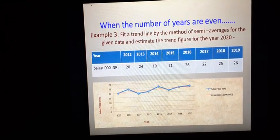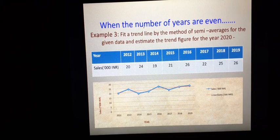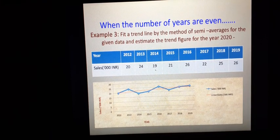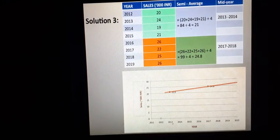Next: when the number of years is even — Example 3. Here we use the same semi-average method, but now we have 8 years from 2012 to 2019. The dependent variable is again sales in thousands of INR. The blue line is drawn by joining points free-hand, and the red trend line is what we will build using the semi-average method.